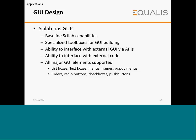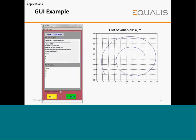Graphical user interface design: baseline SciLab has GUI capabilities, and specialized toolboxes are also available for GUI building. SciLab has the ability to interface with external GUI via APIs and with external code. All major GUI elements are supported: list boxes, text boxes, menus, frames, pop-up menus, sliders, radio buttons, check boxes, and push buttons. In the GUI example shown, a graph of X and Y is plotted using a data file.